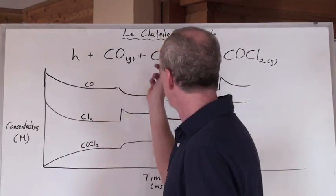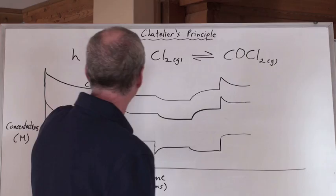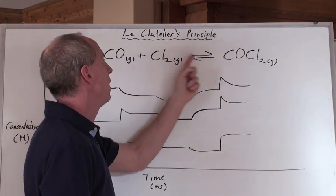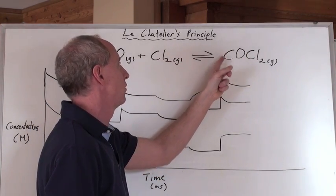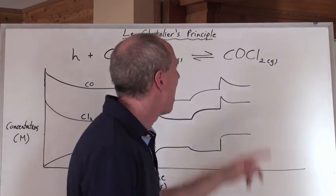So here we're taking a reaction, which is, let's say carbon monoxide gas plus chlorine makes a chemical called COCl2. And they're all gases.